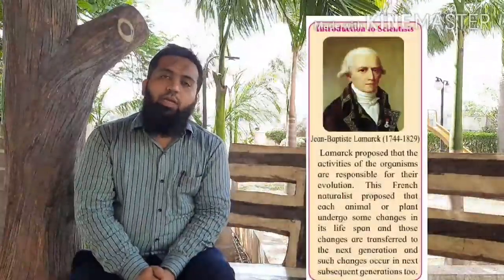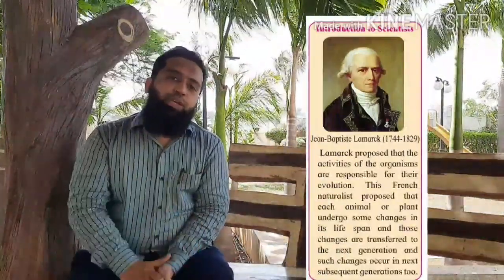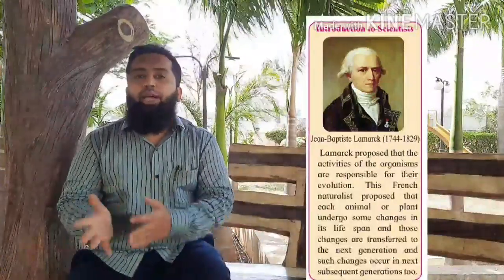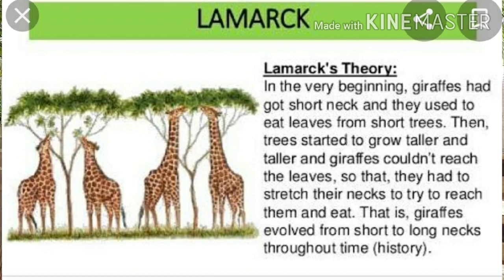Then came the second theory by the scientist Lamarck, and his theory is called Lamarckism. Lamarck said that morphological modifications came in organisms — whether plants or animals. To explain his theory, he gave the example of the giraffe. He said the long neck of the giraffe is due to the absence of short plants, and the giraffe started to stretch their neck in order to reach the leaves of tall trees. Thereby the stretching of the neck led to morphological modifications in their body, and this trait passed from one generation to another — that is why giraffes now have long necks.